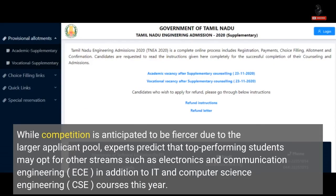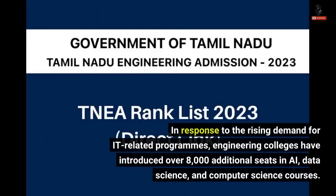While competition is anticipated to be fiercer due to the larger applicant pool, experts predict that top-performing students may opt for other streams such as Electronics and Communication Engineering (ECE), in addition to IT and Computer Science Engineering (CSE) courses this year. In response to the rising demand for IT-related programs, engineering colleges have introduced over 8,000 additional seats in AI, data science, and computer science courses.